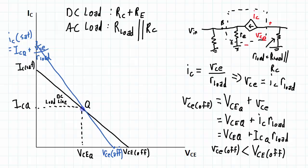But if I'm swinging up this way, that's a little bit longer than swinging down this way towards cutoff. So what I have for my maximum peak-to-peak voltage would be the swing this way, or if I'm just looking at the VCE axis of the graph, I can swing from the VCE DC operating point up to the AC VCE off point.